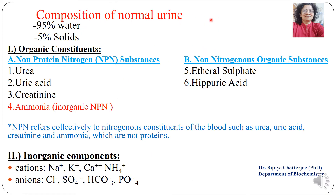The composition of normal urine has 95% water and 5% solids. Among the solids, it has both organic and inorganic components. The organic components include non-protein nitrogen substances and non-nitrogenous organic substances. Non-protein nitrogen substances refer collectively to nitrogenous constituents such as urea, uric acid, creatinine, and ammonia. These compounds are not proteins yet they have nitrogen, so they are termed NPN or non-protein nitrogen compounds. Among these four, ammonia is an inorganic compound.